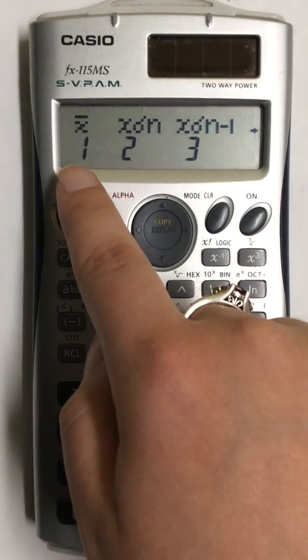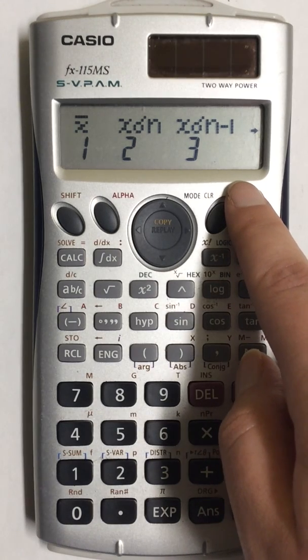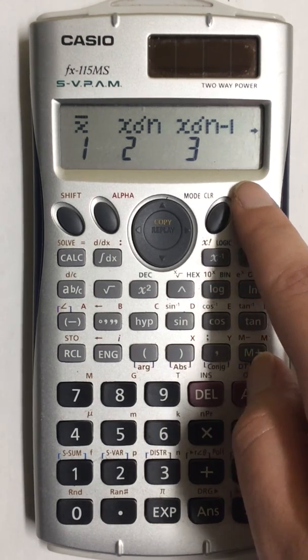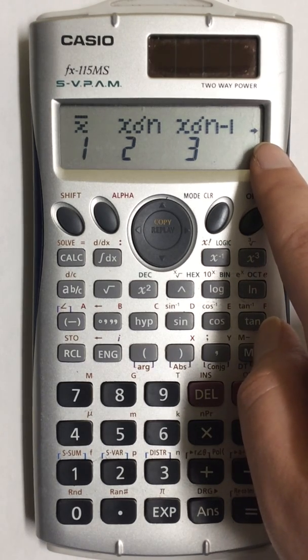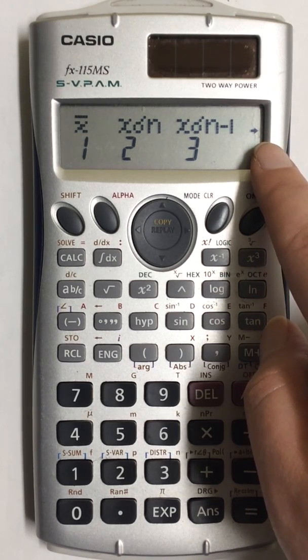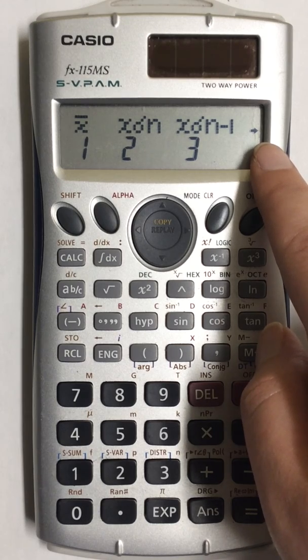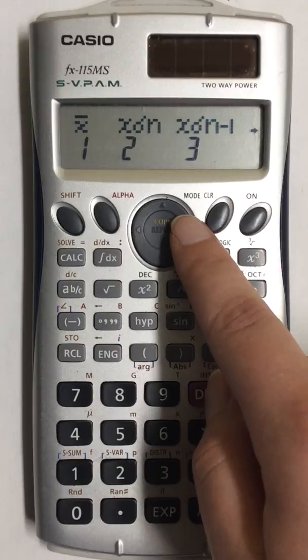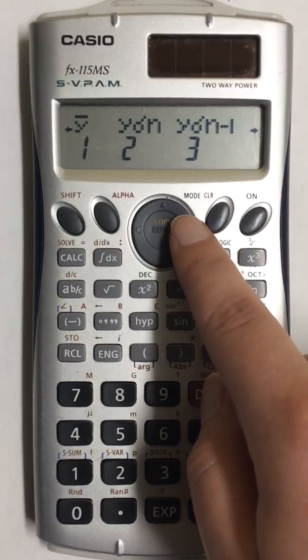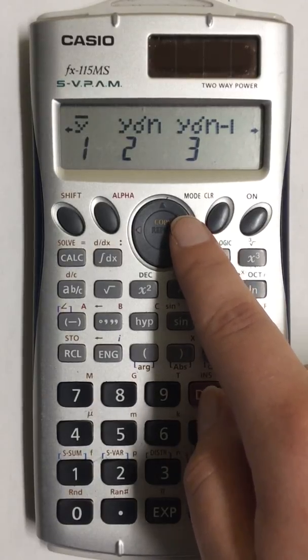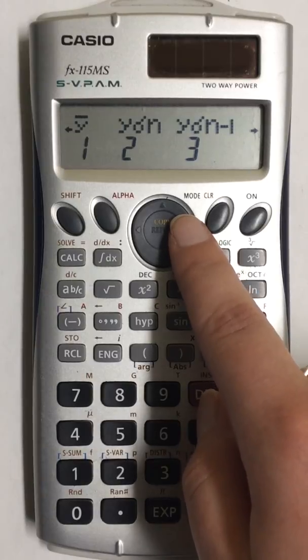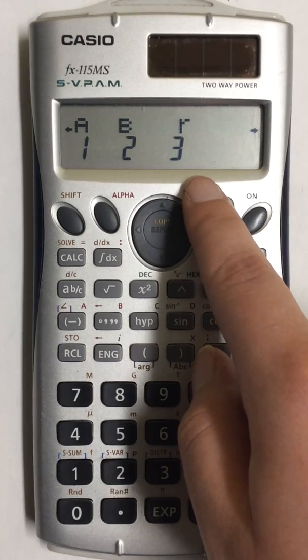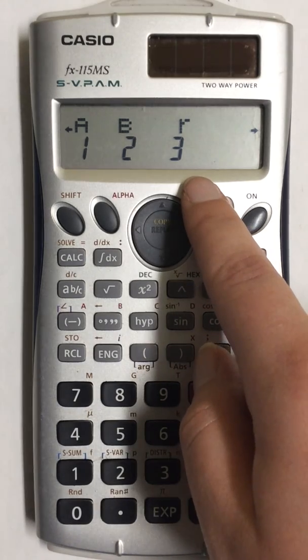As you can see, I have mean and standard deviation showing on the screen, but I also have an arrow off to the right. That means I have more values to the right. So I'm going to use the right arrow and advance through the screens. Here I have values for Y, but I'm going to keep going. On the next screen I have A, B, and R.